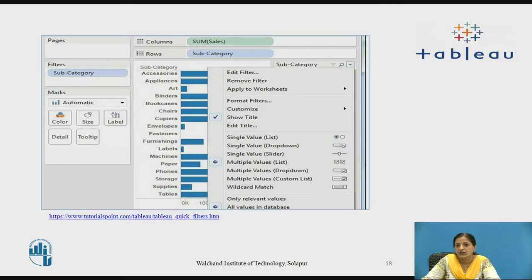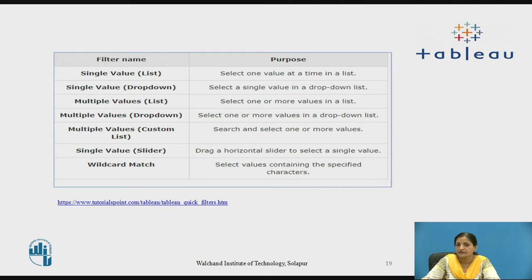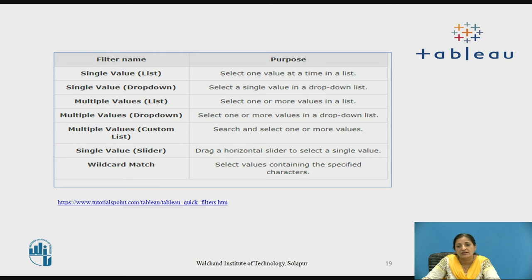When you right-click on the sub-category dimension, it shows a list of filters: Single Value, which selects one value at a time in the list; Single Value Drop Down, which selects a single value in a drop-down list; Multiple Values, which selects one or more values in the given list; Multiple Values in Drop Down; Multiple Values in Custom List, where you search and select one or more values; Single Value Slider, where you drag a horizontal slider to select a single value; and Wild Card Match, which selects values containing specified characters.